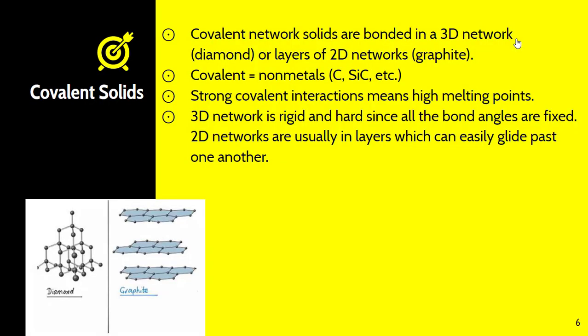Covalent network solids are different than covalently bonded compounds. These form networks, similar to ionic solids. An example is carbon, which can form diamond or graphite. Diamond is a three-dimensional network, and graphite is two-dimensional. Because they are covalent network solids, they are nonmetals. The strong covalent interactions mean very high melting points. The 3D network is very rigid and hard since all bond angles are fixed, which explains diamond's hardness. Two-dimensional networks are usually in layers which can easily glide past each other, making graphite useful for writing because those layers glide on paper.